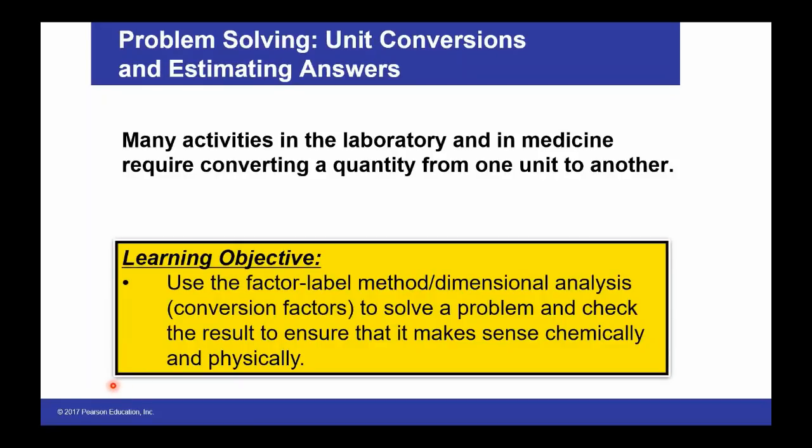This video is going to cover solving problems using unit conversions and helping to estimate answers. We will often use conversions in chemistry when doing calculations and we have to convert from one unit to another. We call this the factor label method or dimensional analysis, and we use dimensional analysis to help us solve problems.